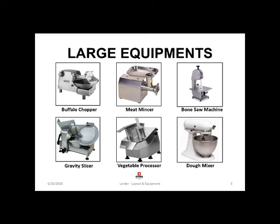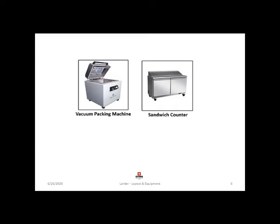Large equipment are basically heavy duty equipment which are specially designed to perform high volume tasks on a regular basis in a kitchen. These equipment mainly help to execute tasks efficiently and effectively with appropriate safety. Some examples of large equipment are: buffalo chopper, meat mincer, bone saw machine, gravity slicer, vegetable processor, dough mixer, vacuum packing machine and sandwich counters. These are the equipment which one will find in a larder of a hotel.